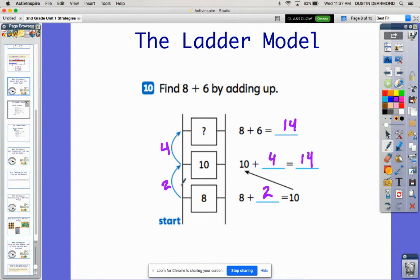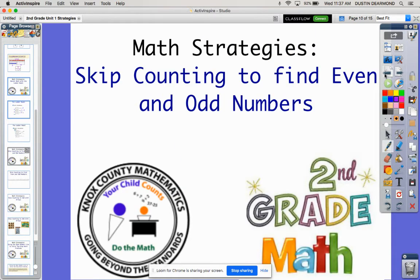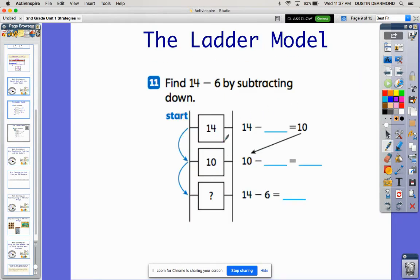Again, not much different than the open number line, but it's using it vertically in the form of a ladder. Don't worry about those blank spaces in the book. It might be better just to make your own number sentence. Let's look at the other example.